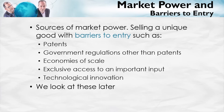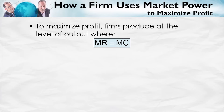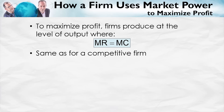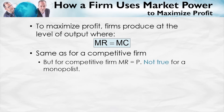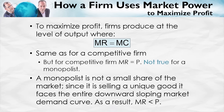We want to focus on how a firm with market power chooses to set its price — what is the profit-maximizing price? A monopolist maximizes profit by producing at the level of output where marginal revenue equals marginal cost. That's the same rule as for a competitive firm, but the difference is that for a competitive firm, marginal revenue equals price. That's not true for a monopolist. Since the monopolist faces the entire downward-sloping market demand curve, marginal revenue will be less than price.